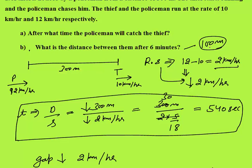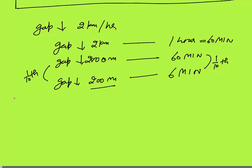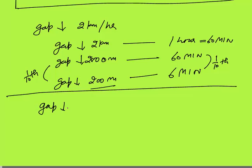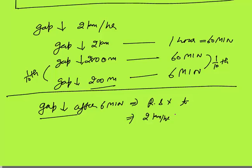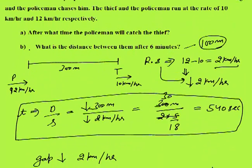Another way to solve this second part: gap reduction after 6 minutes. Since increase or decrease in gap is considered a distance, distance = relative speed × time = 2 km/hr × (6/60) hours = 2 × (1/10) = 1/5 km = 200 meters. It means that after 6 minutes, the gap between policeman and thief reduced by 200 meters. The gap left would be 100 meters. That is your final answer.